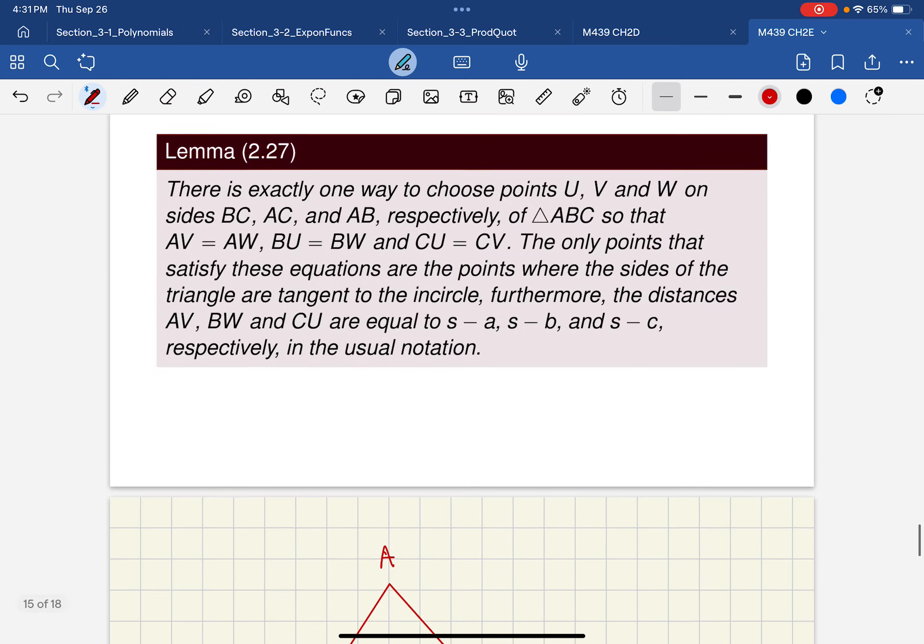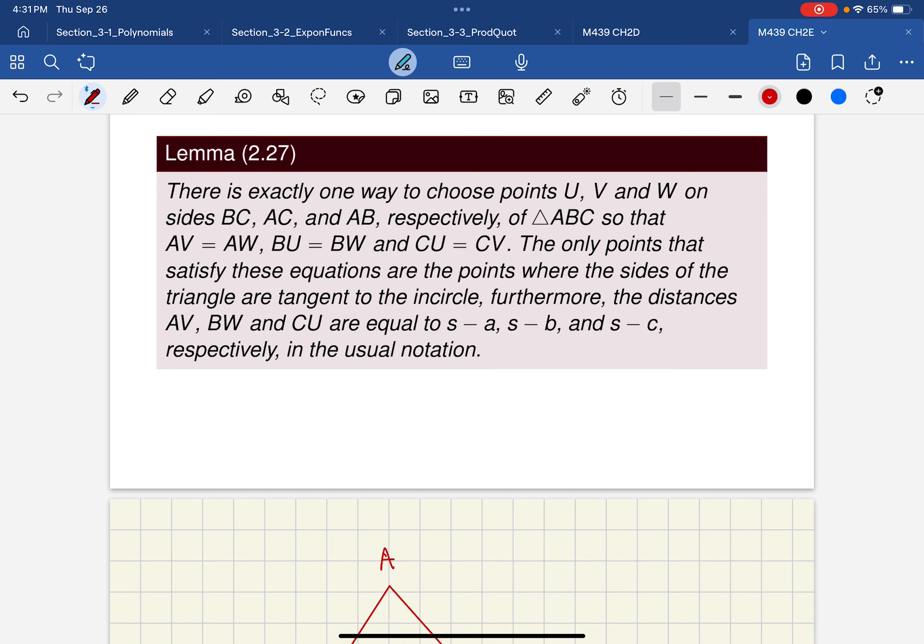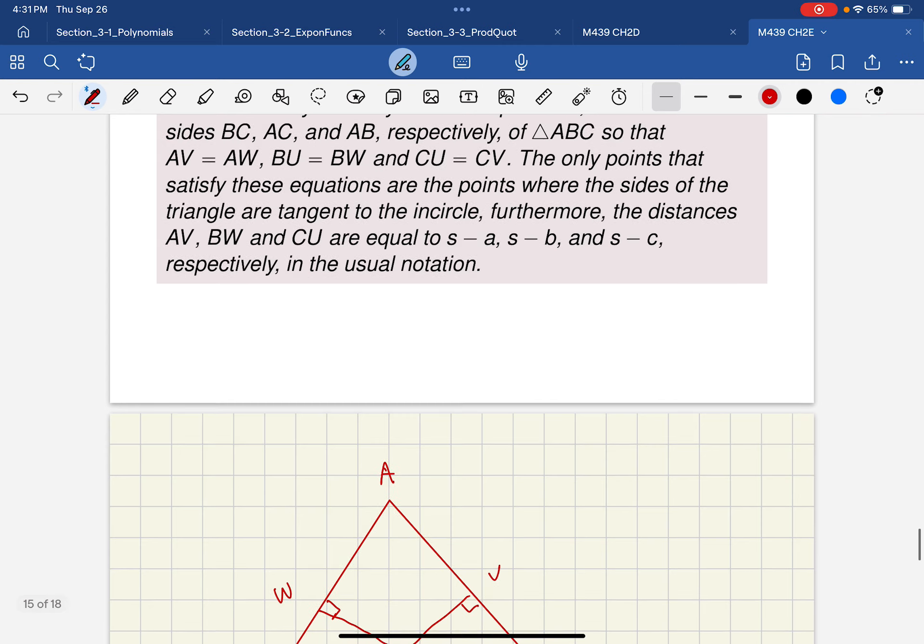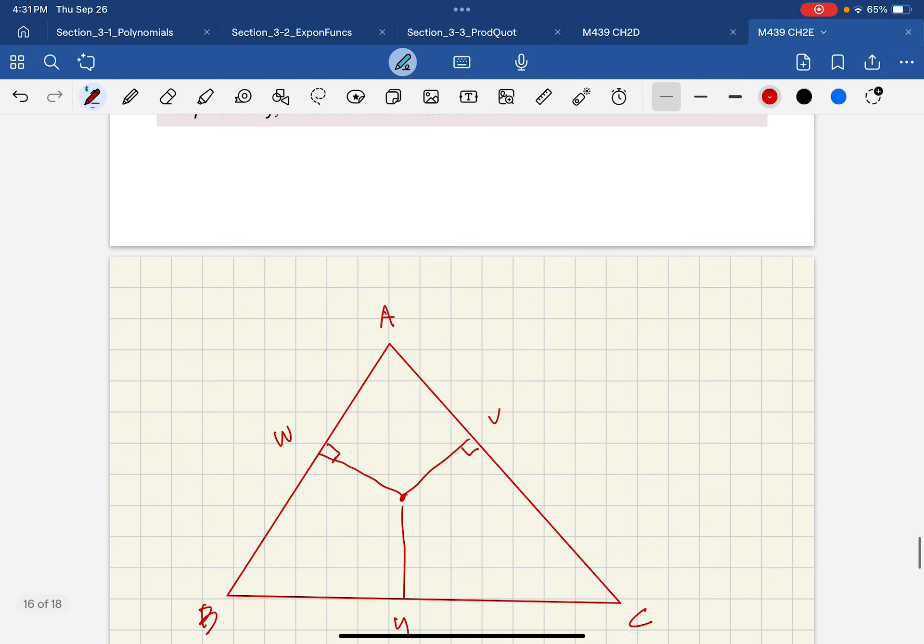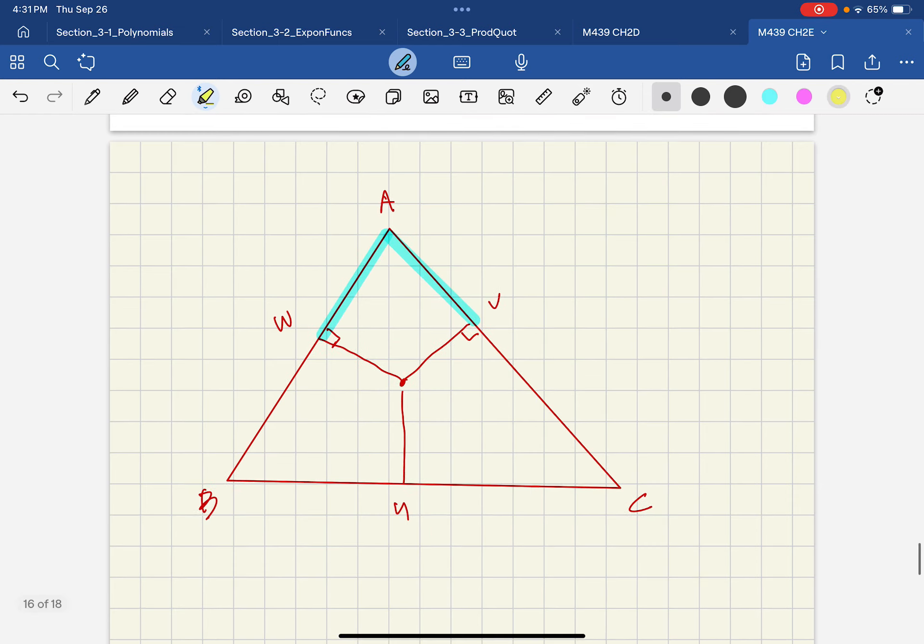He says that there's exactly one way to choose points U, V, and W on these sides so that AV equal AW. So let's kind of do that with a highlighter. AV equal AW. CU equal CV.